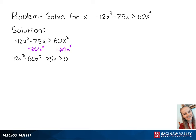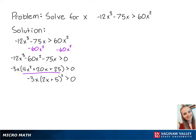We can now factor out a negative 3x from the left side so that we have negative 3x times 4x squared plus 20x plus 25 is greater than 0. To simplify this further, we can also factor this trinomial so that we have negative 3x times 2x plus 5 squared, which is greater than 0.